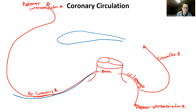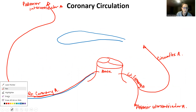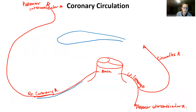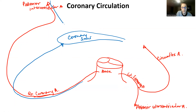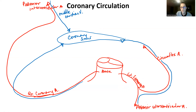So the small cardiac vein runs parallel to the right coronary artery and drains into the coronary sinus. The coronary sinus is underneath the left atrium on the posterior side. The middle cardiac vein runs parallel to the posterior interventricular artery and drains into the coronary sinus. The great cardiac vein runs parallel to the anterior interventricular artery and the circumflex artery, draining into the coronary sinus, which then has an opening draining into the right atrium.